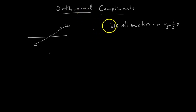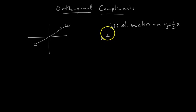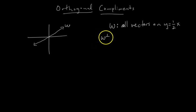Now the question is: what is the orthogonal complement of W? You could call it the orthogonal complement of W, but if you're a cool kid you just say W perp. W perp is denoted with a perpendicular sign in the superscript position — don't confuse it with the transpose sign. We call it W perp for perpendicular.